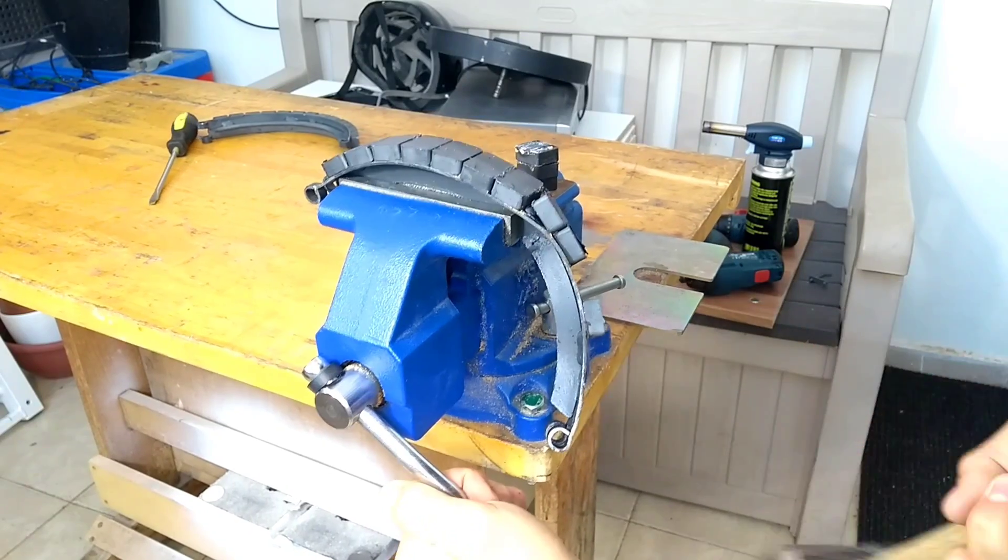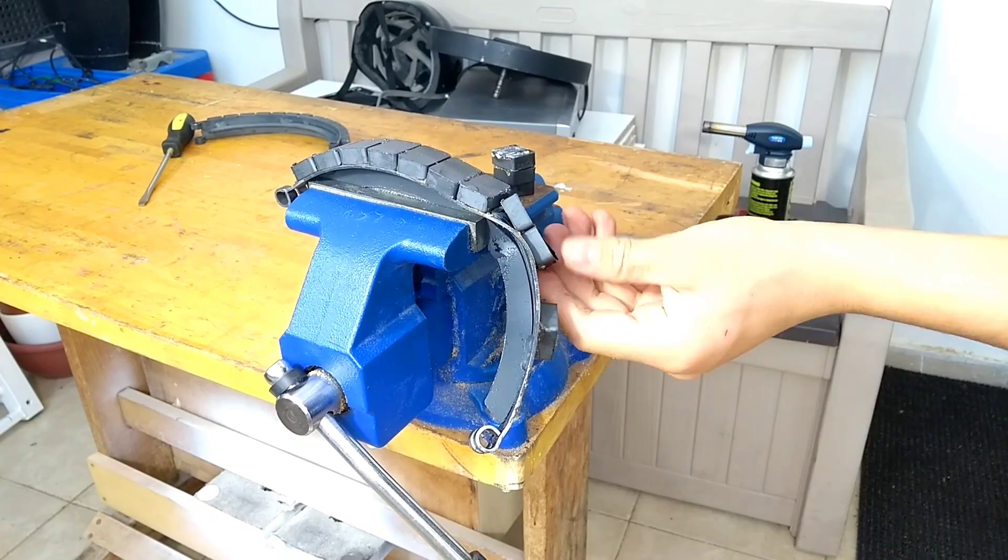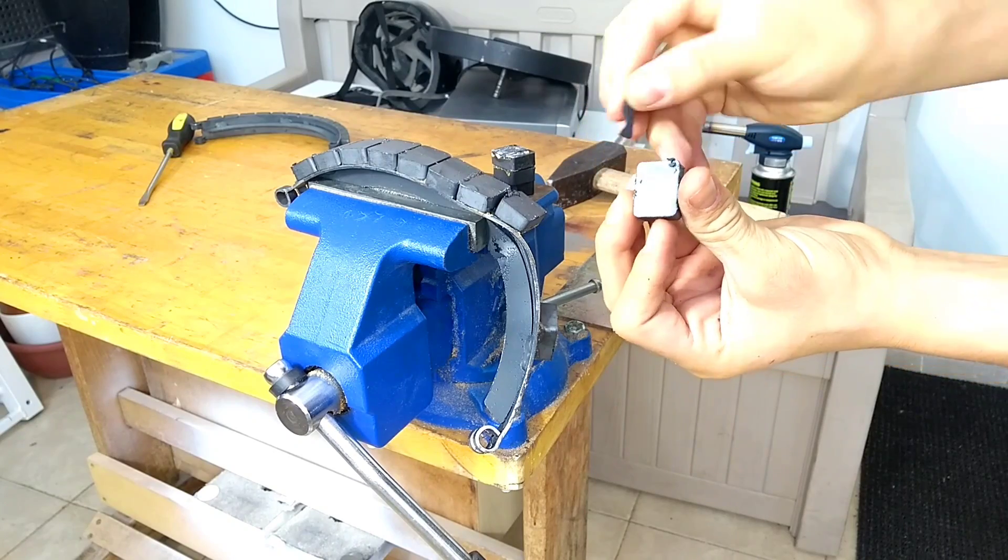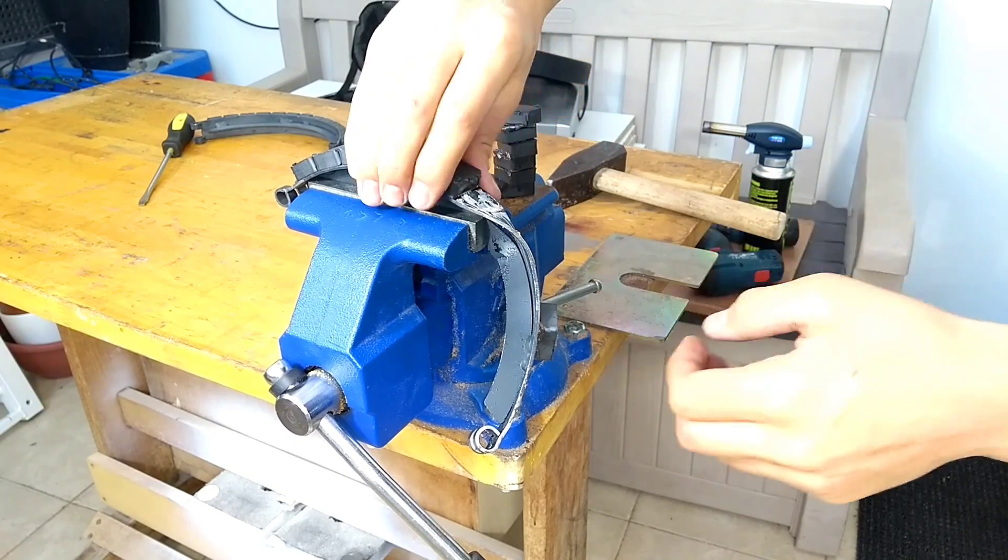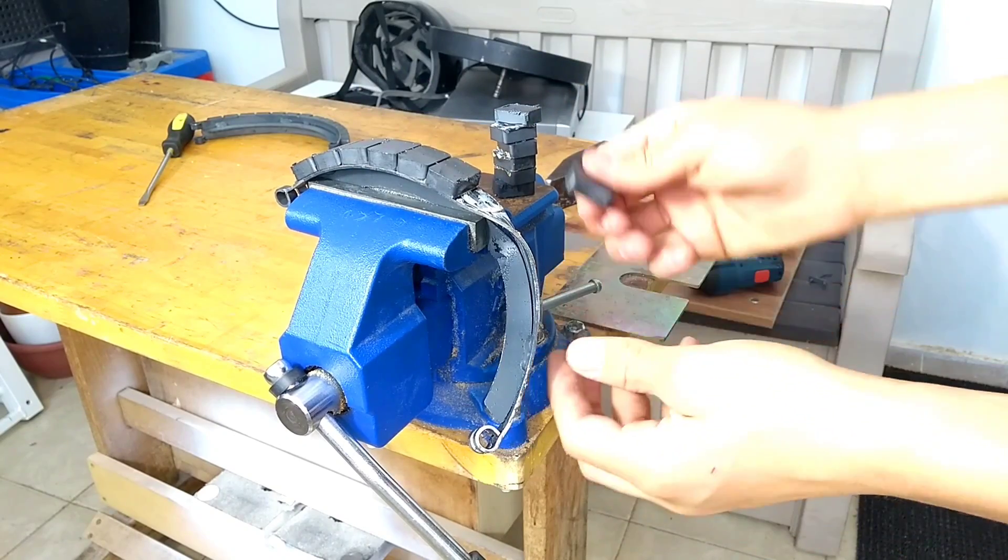These magnets tend to be very brittle, so to prevent them from chipping while I release them, I thought to bend the steel they're glued to so the adhesive fails first, which was mostly effective but not perfect as a few still broke.